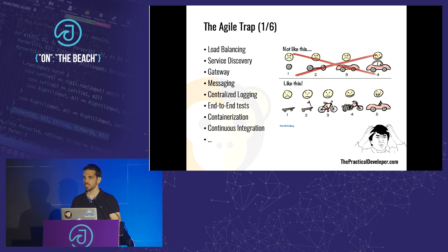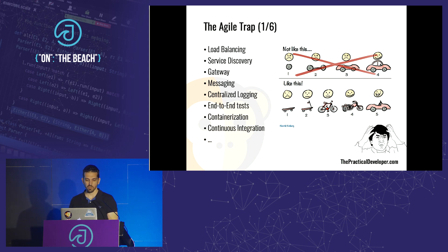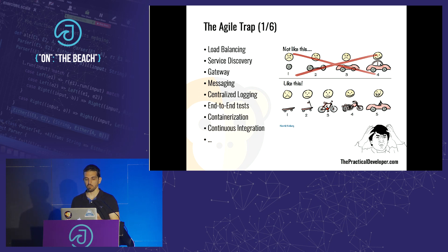We said, maybe we can go two or three sprints without centralized logging or without a gateway to route traffic to different microservices — and that was chaos. Nobody knew how they could try their services with other people's services. You have to think about load balancing, service discovery, gateway, messaging — Kafka, RabbitMQ, whatever — centralized logging, making sure all microservices work together, Docker, Kubernetes, continuous integration and continuous deployment. So many things, and it's very difficult to do that in an agile way from the beginning.